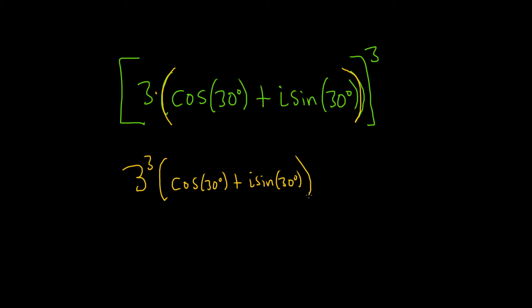Alright, so the three cubed is 27, and now here's the trick. Whenever you have something like this, what you can do is you basically take the three and you multiply it by the angles. So the first one would be cosine, three times 30 is 90 degrees, plus, and then this would be i sine of three times 30 again, 90 degrees.